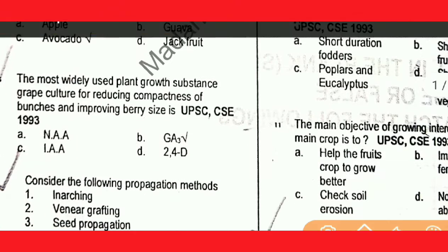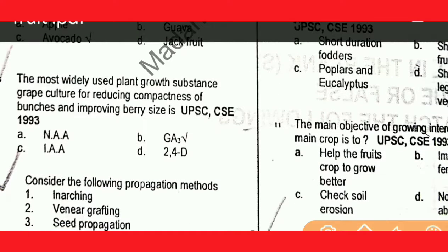The next question: the most widely used plant growth regulator for reducing compactness of bunches and improving berry size in grapes is GA3. The correct option is B.